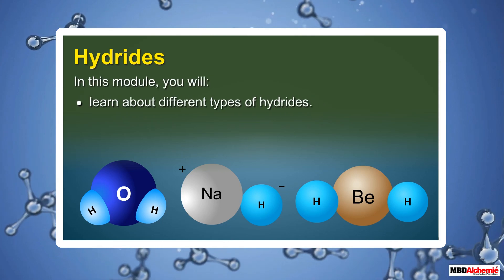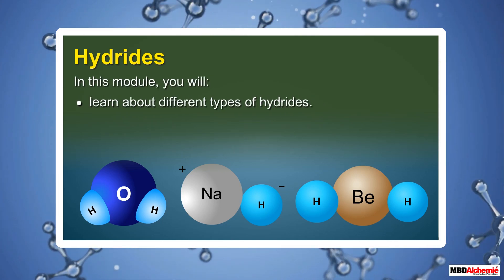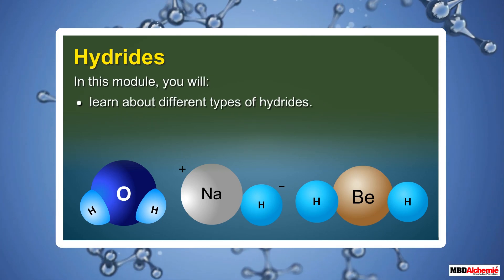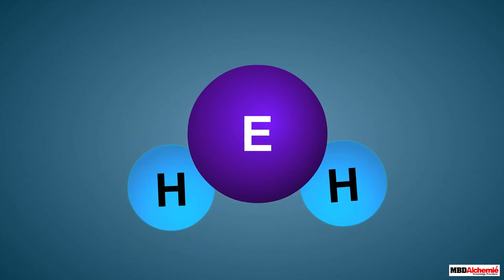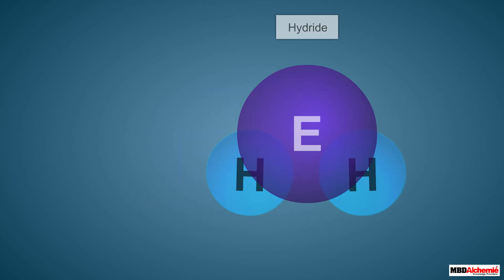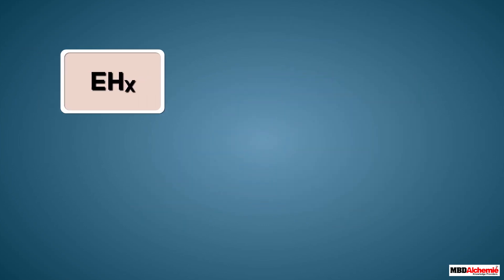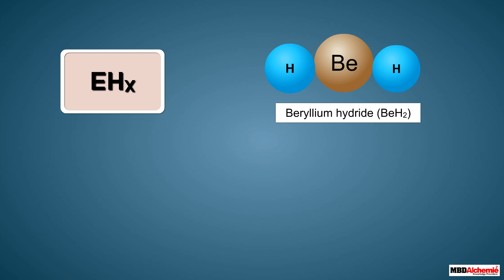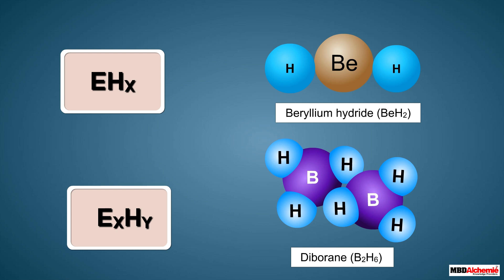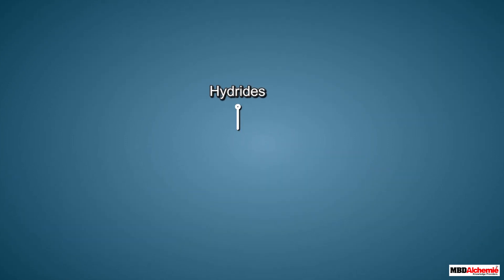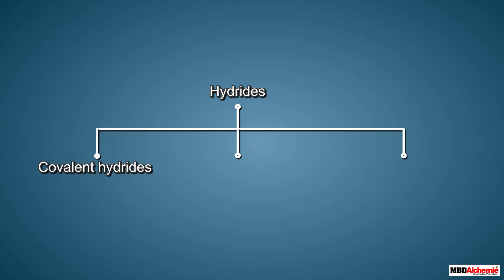In this module you will learn about different types of hydrides. Dihydrogen has the ability to combine with an element to form binary compounds called hydrides. These hydrides are expressed as EHx, for example beryllium hydride BeH₂, or ExHy, for example diborane B₂H₆.